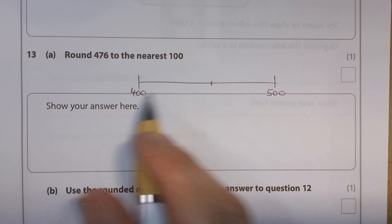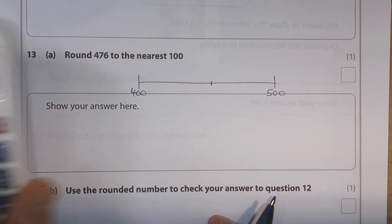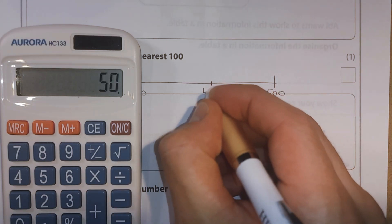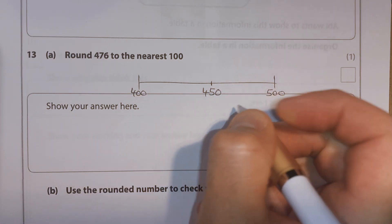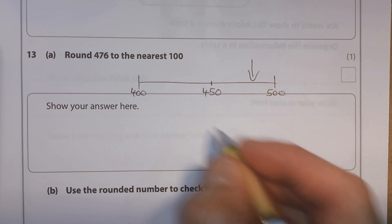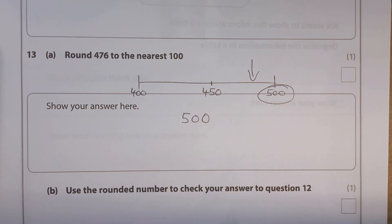So again, let's think about what halfway would be. Well, if the whole range is 100, what's half of 100? Hopefully you know this, but we can check it with the calculator. 100 divided by 2. So halfway is 50. So halfway between these must be 450. 476 is going to be in this side. So we round up to 500.